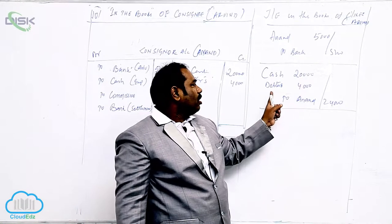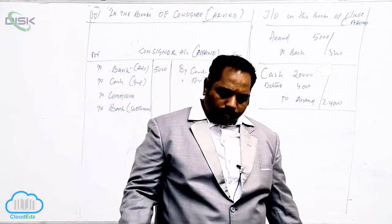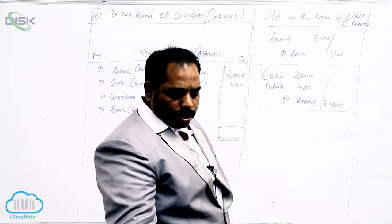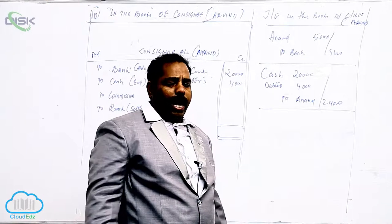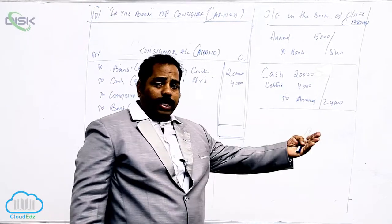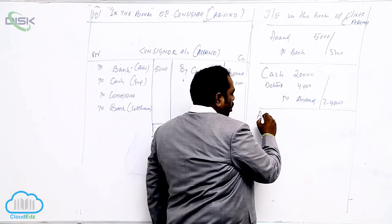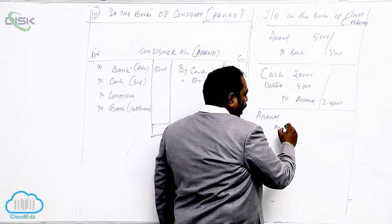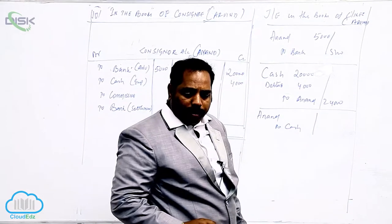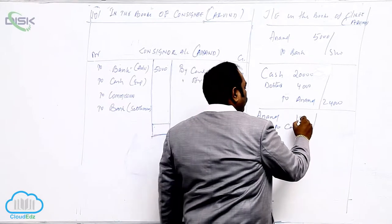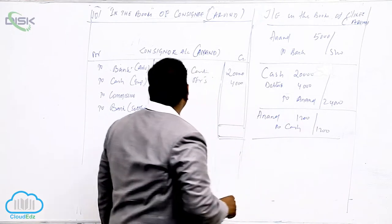Cash Account debit, Debtors Account debit, to Anand. Next, selling expenses rupees 1,200 — all expenses borne by the consignee have to be reimbursed by the consignor, so the consignor becomes debtor. Entry: Anand Account debit to Cash. The total expense is 1,200. In Anand's account write: For expenses 1,200.